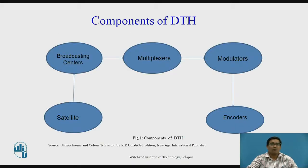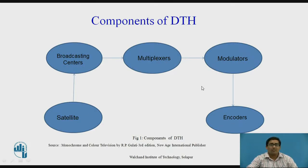Now we want to see the components of the DTH. The components of the DTH are: first, satellite; second, broadcasting centers; third, multiplexers; fourth, modulators; and fifth, encoders. Now we want to see these one by one — the components of the DTH.